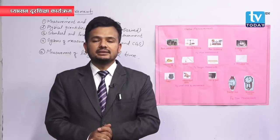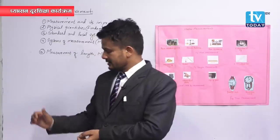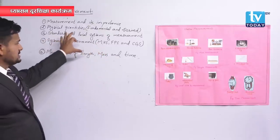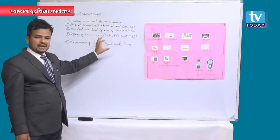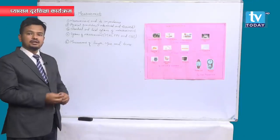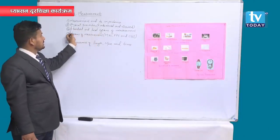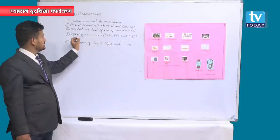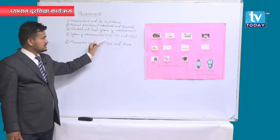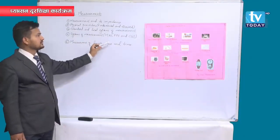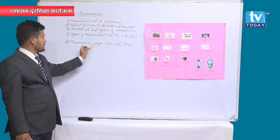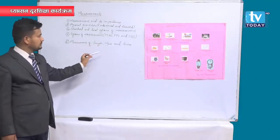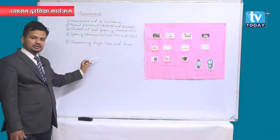Today our lesson is on measurement. On the whiteboard you can see the different topics we are learning today — this is the syllabus for the very first lesson of science: measurement. We will be dealing with measurement and its importance, physical quantities, fundamental and derived quantities, standard and local systems of measurement, MKS, FPS, and CGS systems, and measurement of length, mass, and time.